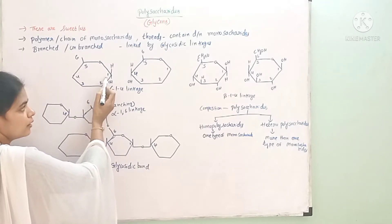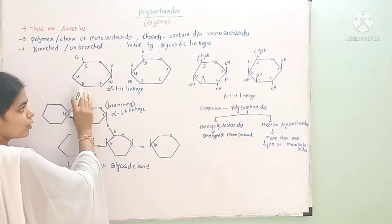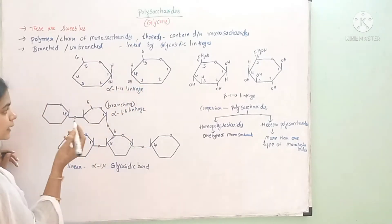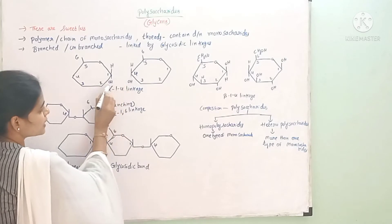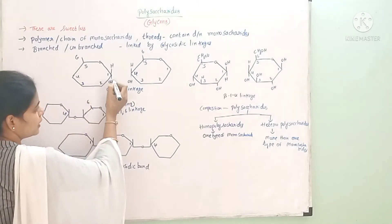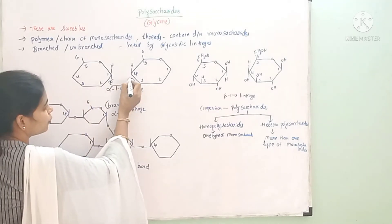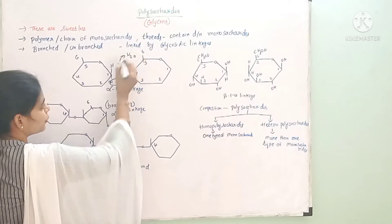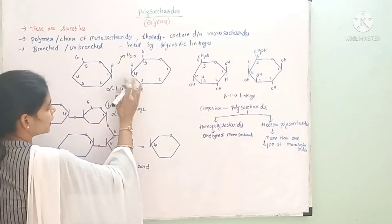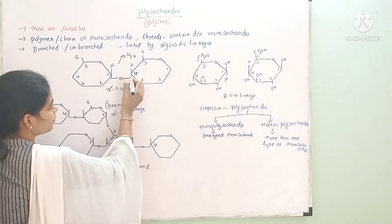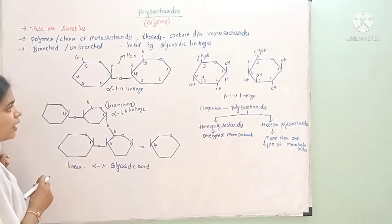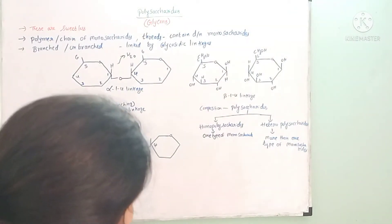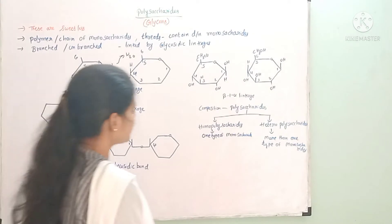One monosaccharide links at the first carbon and another monosaccharide at the fourth carbon. A hydroxyl group is removed in the form of water, and because of the oxygen, a linkage is formed — this is called alpha 1,4 linkage.